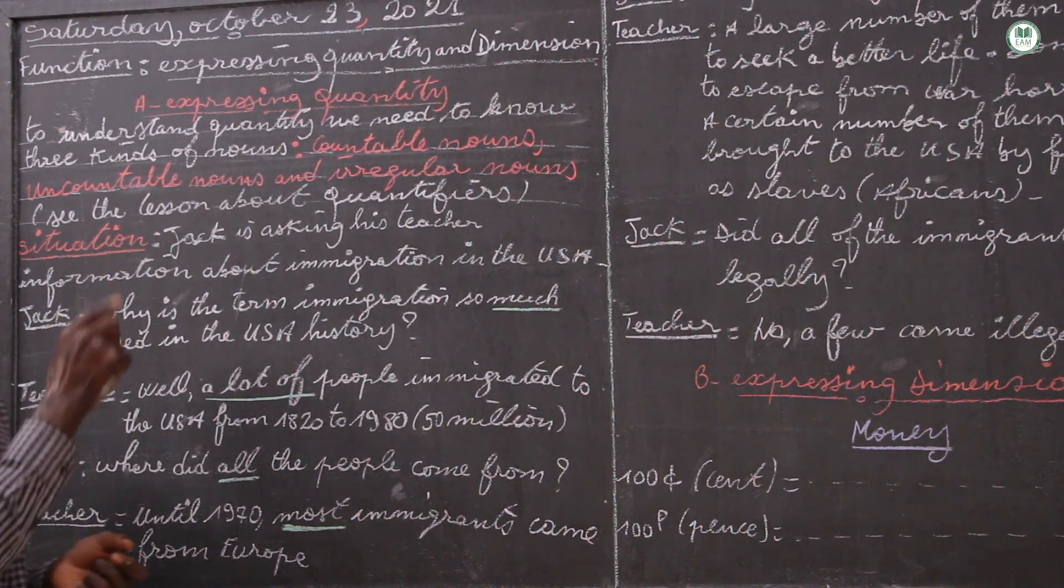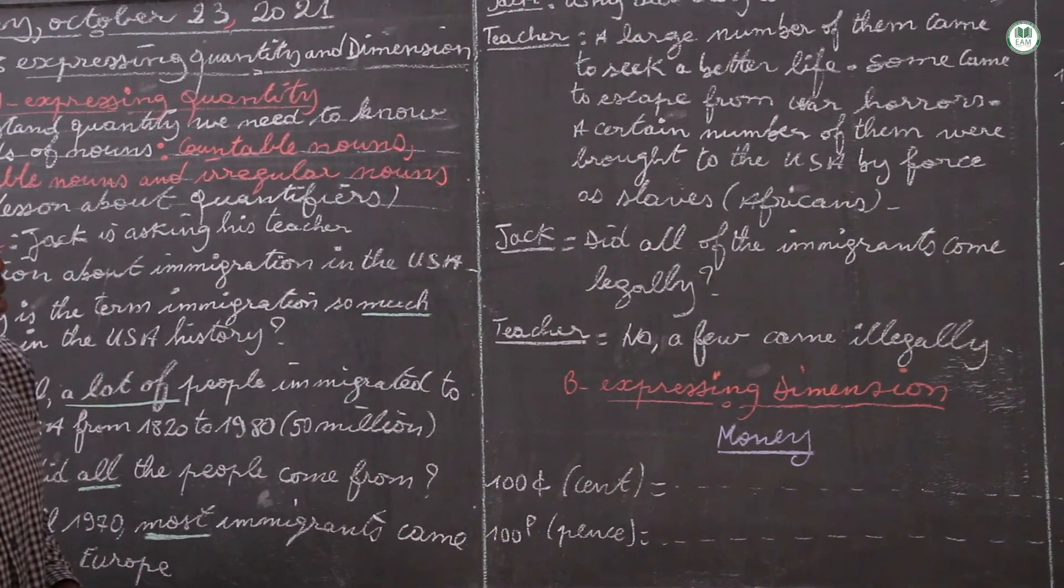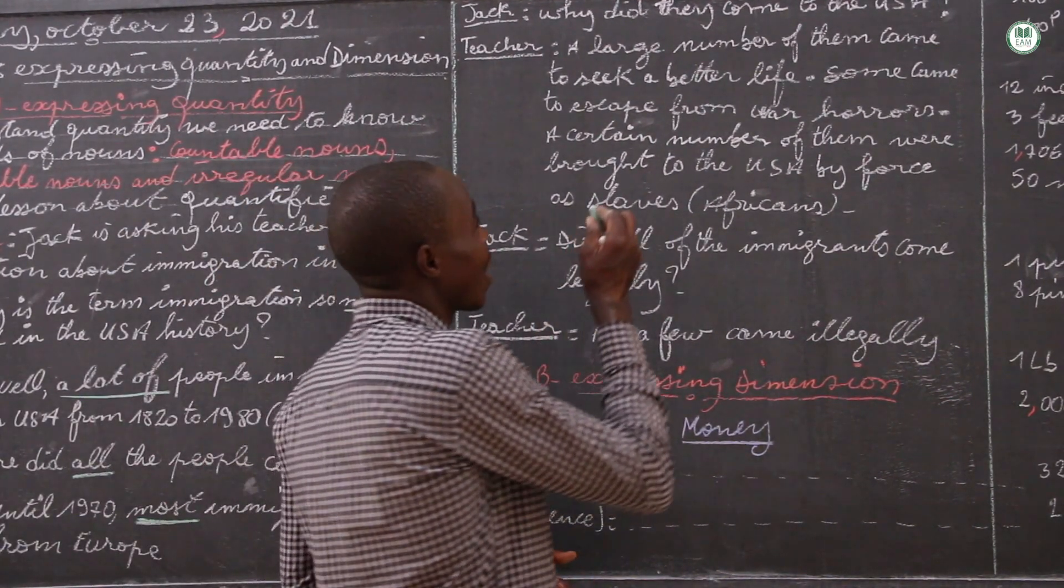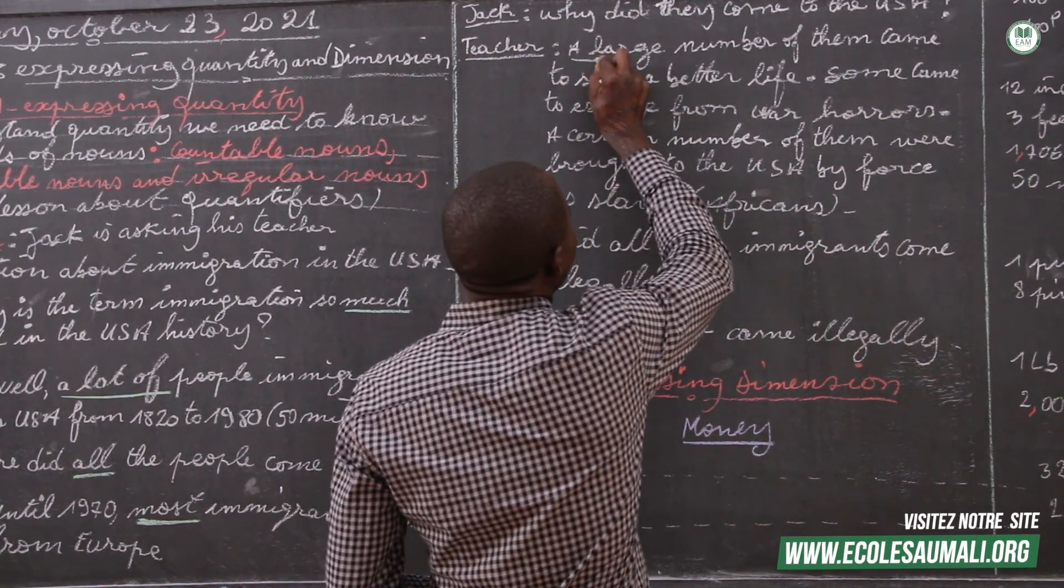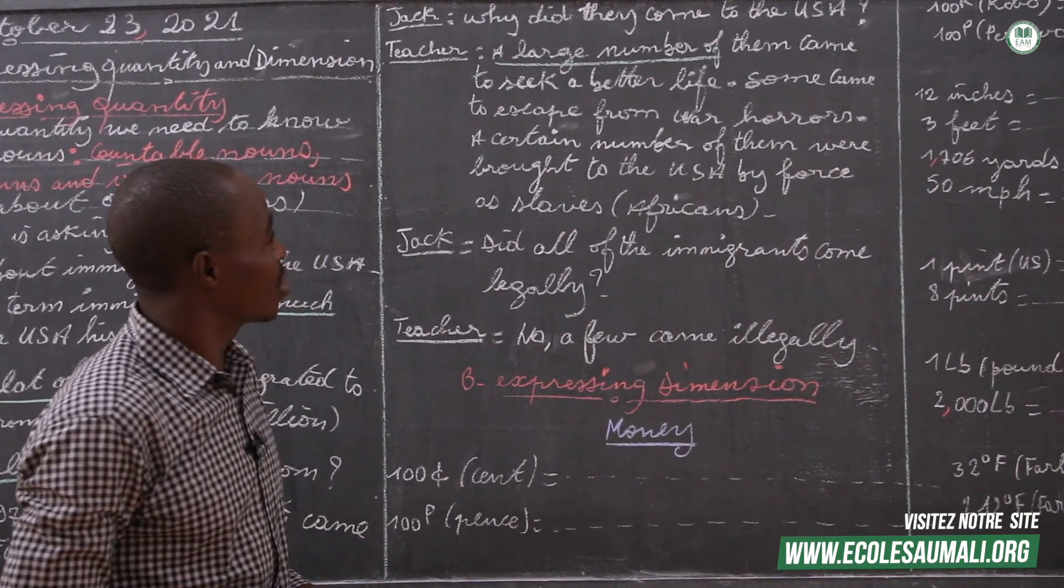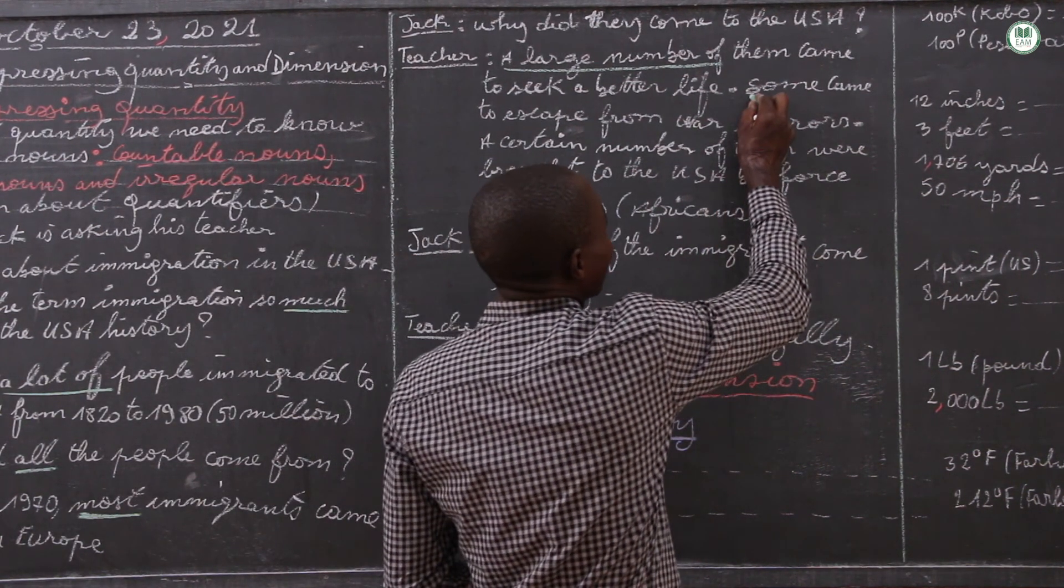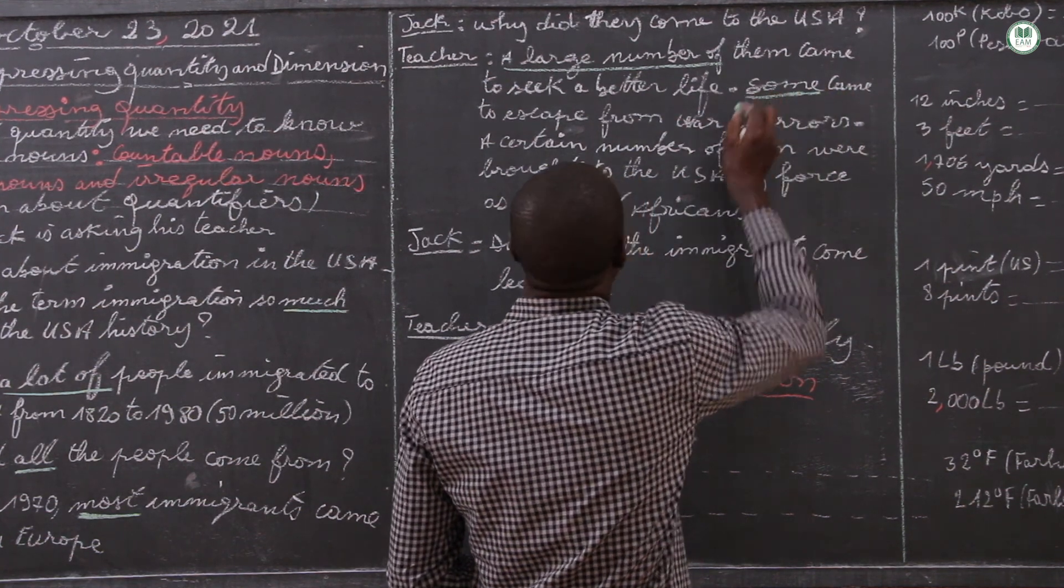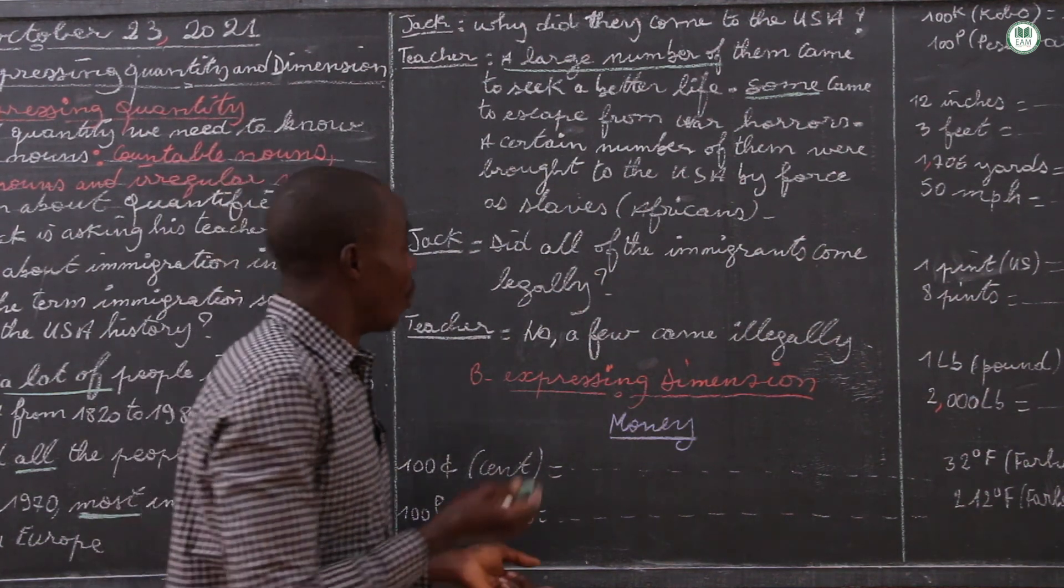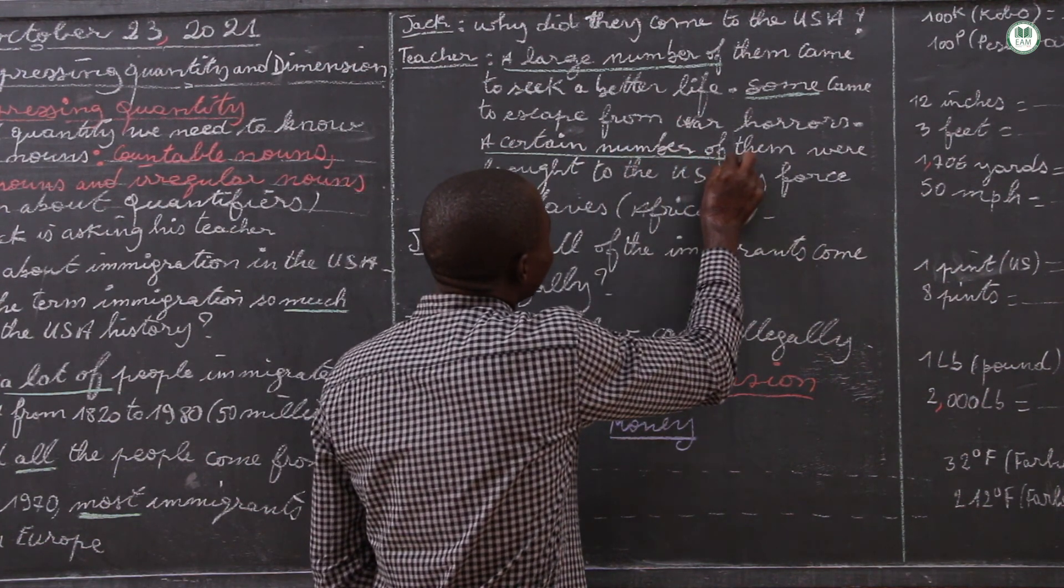The dialogue continues. Why did they come to the USA? A large number of - so we have a case of countable noun again, countable noun - came to seek a better life. Some came to escape from war horrors, a certain number of - we have a case of countable.